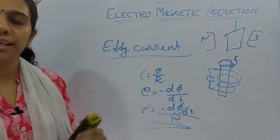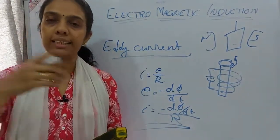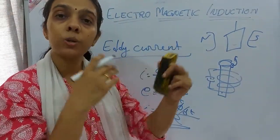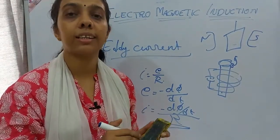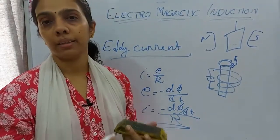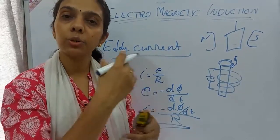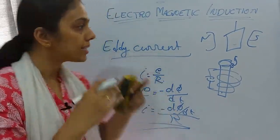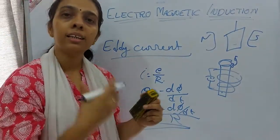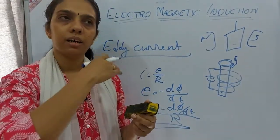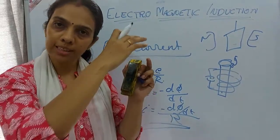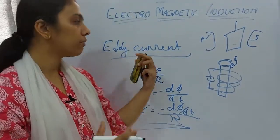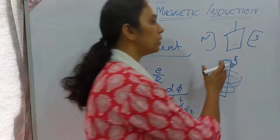Similarly, if a magnet is oscillating near a metallic sheet, after some time we observe the oscillations decreasing. This is called electromagnetic damping — the magnetic flux linked with the circuit keeps changing, so an EMF is induced in the opposite direction, and the amplitude of oscillations keeps decreasing due to eddy currents.